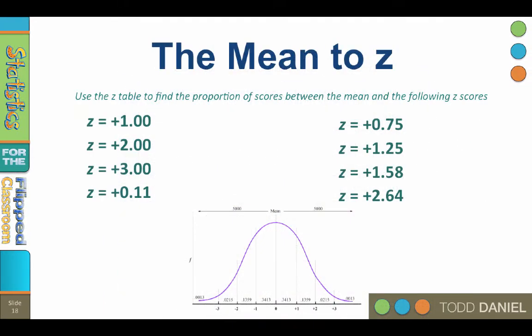Now that you know how to use the z-table, let's apply what we know. Use the z-table to find the proportion of scores between the mean and the following z-scores. I will ask the question, then give you the correct answer. Feel free to pause the video at any point as you work out the answer on your own.